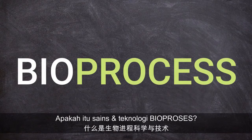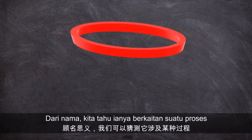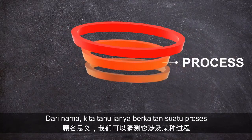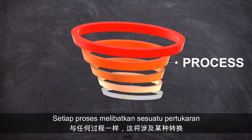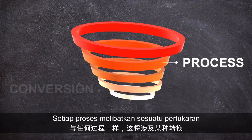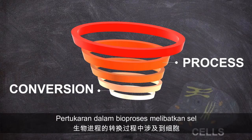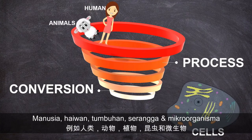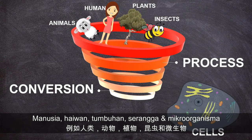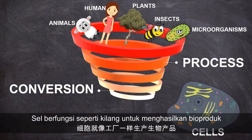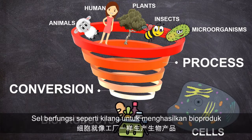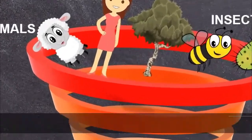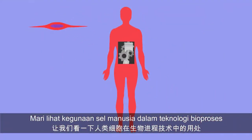What is bioprocess science and technology? From the word itself, one can guess it involves some type of processes. As in any process, this involves aspects of conversions. In bioprocess, conversions involve the use of cells. Cells are obtained from different sources ranging from humans to animals, plants, insects, and microorganisms. Cells are used as factories to produce bioproducts.